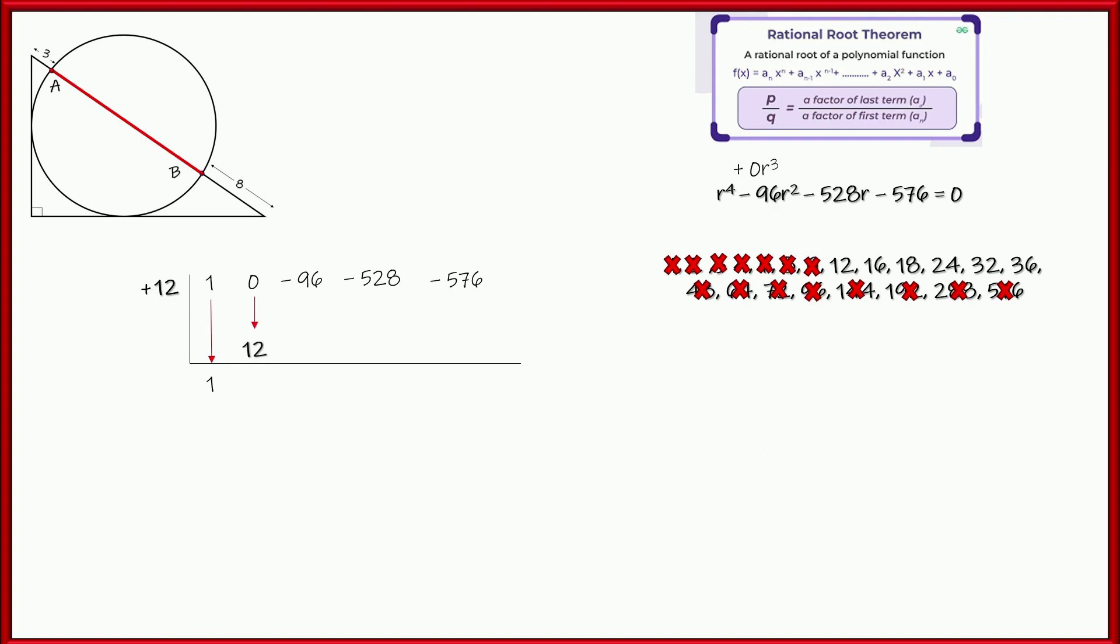And then let's just go ahead and do the synthetic division. Drop down the 1, multiply it by 12, right? 1 times 12 is, of course, 12. And then combine 0 and 12, and that's 12 again. Now, 12 times 12 one more time. That's 144, right? 144 minus 96, because this is a positive. That's a negative. That's equal to 48. All right, 48 times 12 is 576. We're going to subtract those because we have a positive and a negative. That's 48 again, which is kind of cool. Multiplying by 12 one more time, we get 576, and look at that. We have a remainder of 0, which means that 12 is a root.